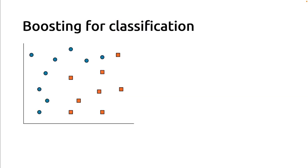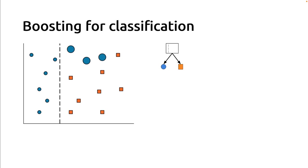Let's start again with the classification example we used to introduce bagging. This is the same training set as previously, with two input features. The location in this two-dimensional space are the input variables for the classification model, and the task is a binary classification of blue versus orange. When we train a boosting ensemble, instead of sampling randomly the training set, we will consider the full training set at once. We will fit a first classification model using a decision tree that is shallow and will underfit intentionally — a first decision tree with a depth of one, which splits vertically.